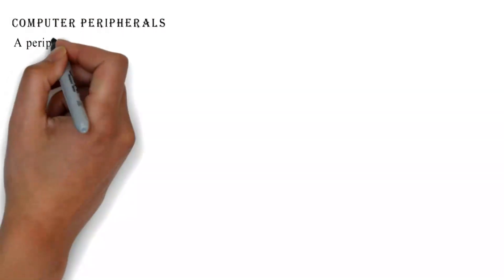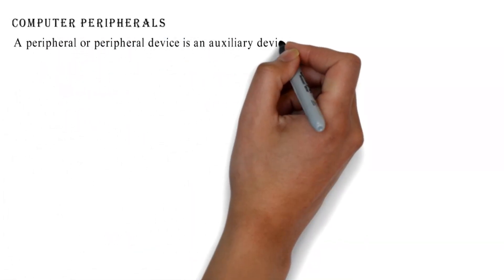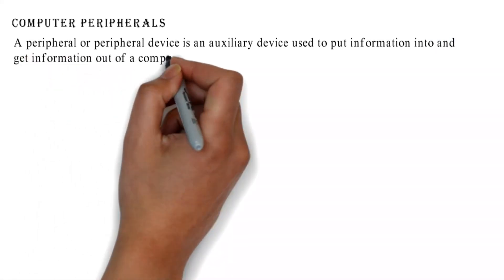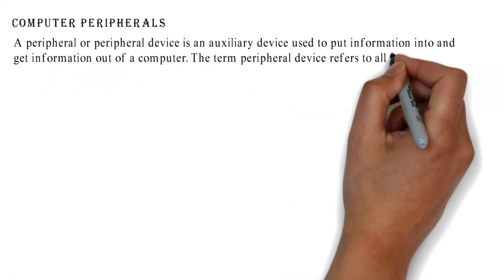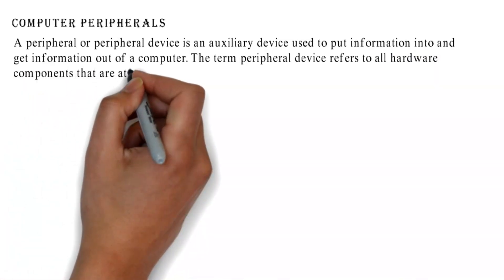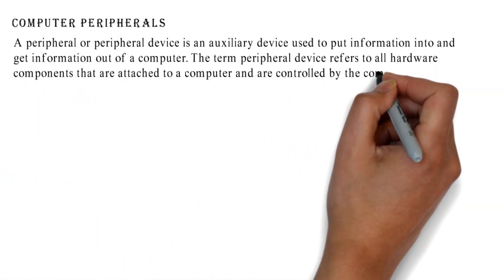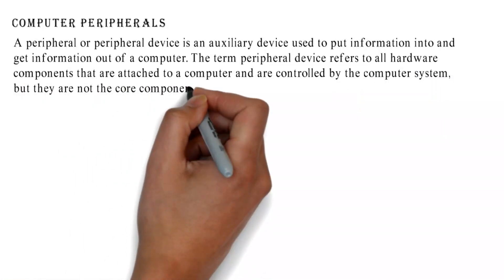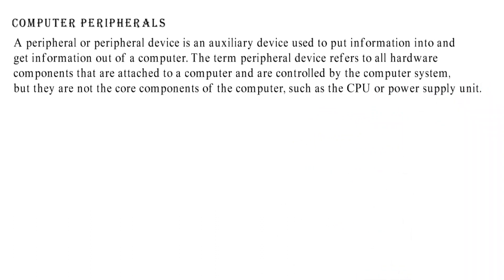Computer peripherals. A peripheral or peripheral device is an auxiliary device used to put information into and get information out of a computer. The term peripheral device refers to all hardware components that are attached to a computer and are controlled by the computer system, but they are not the core components of the computer such as the CPU or power supply unit.